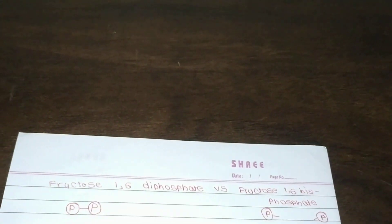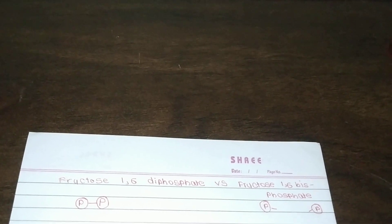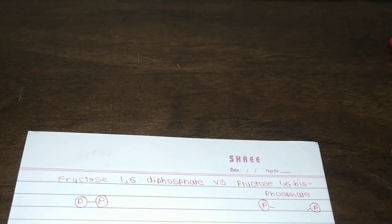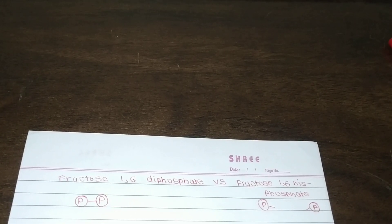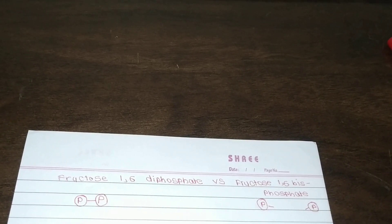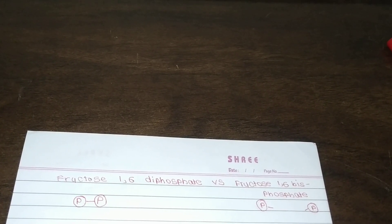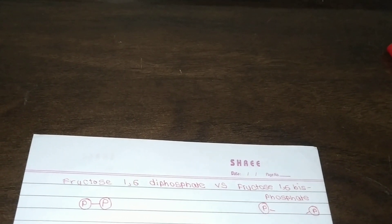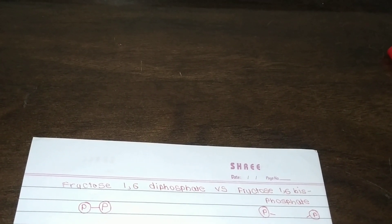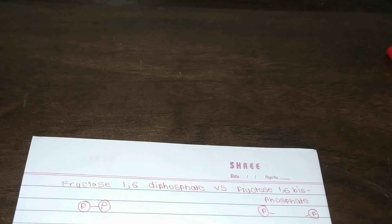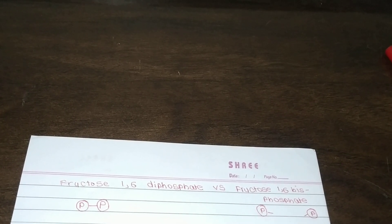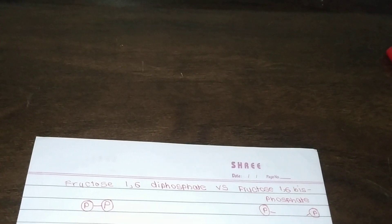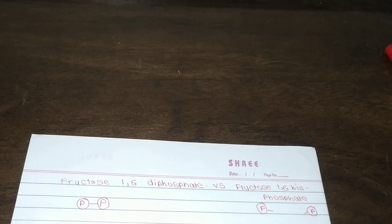What is bisphosphate? Bisphosphate means two phosphates are attached at different positions of a particular compound. For example, in this case, if a phosphate is attached at position number 1 and position number 6 of a fructose, then it is called fructose 1,6-bisphosphate.